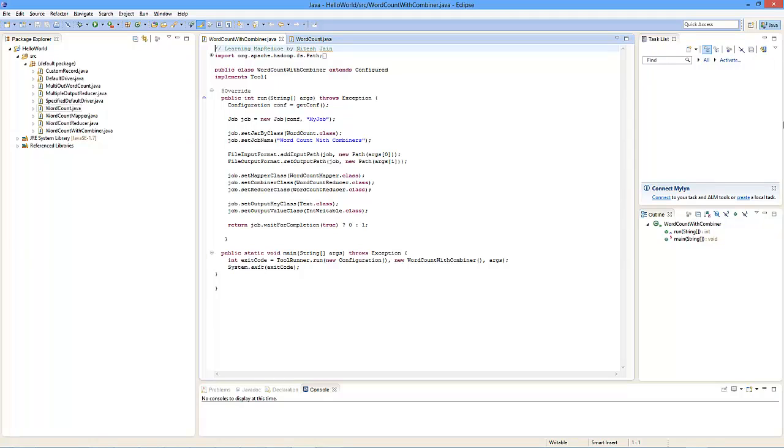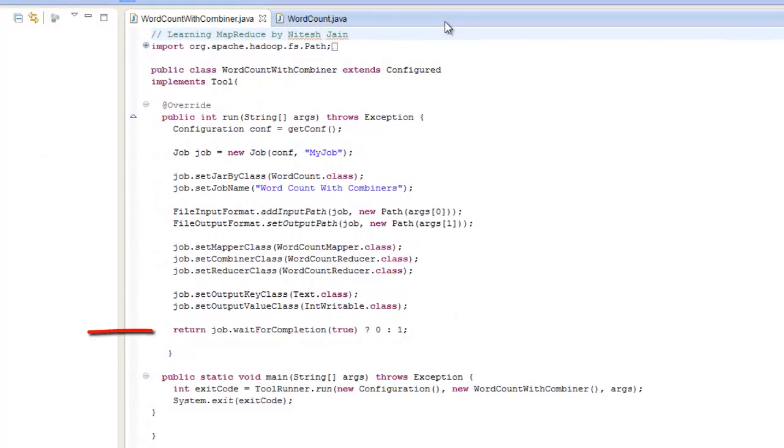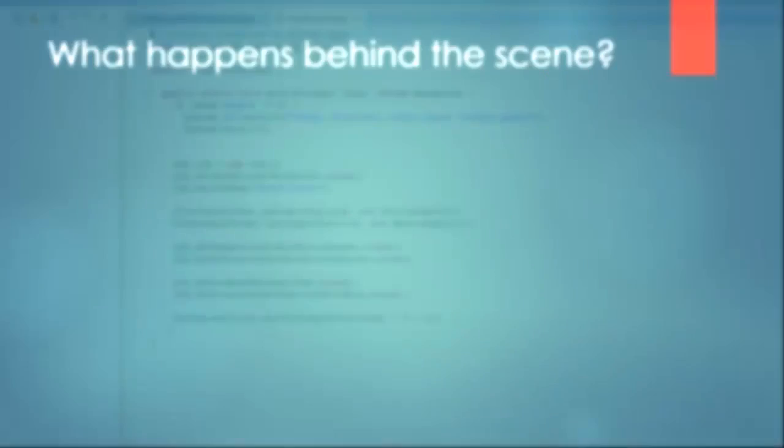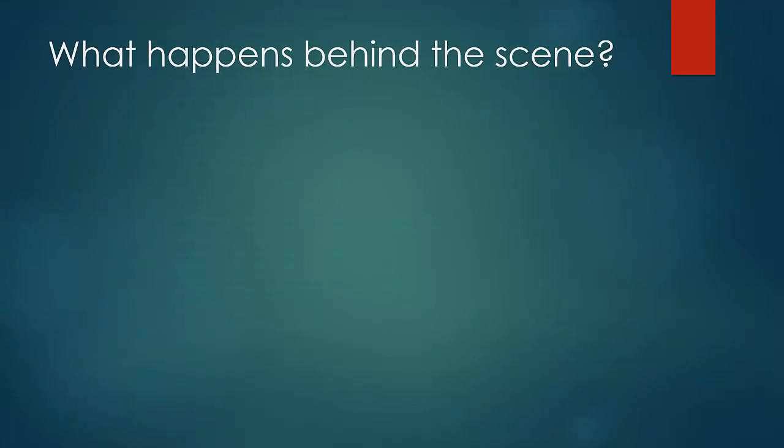The job gets submitted by wait for completion function, which is the last statement of every program we have written. It is the last statement in the run method which we override in the driver class when we are using the tool runner, and the last line in the main function if we are coding our driver logic in main function. Wait for completion method causes the job to be submitted for processing.